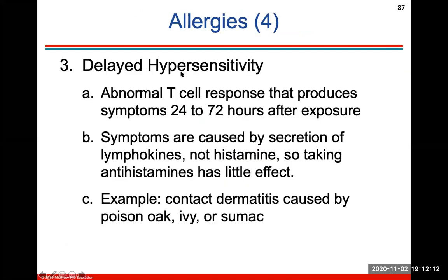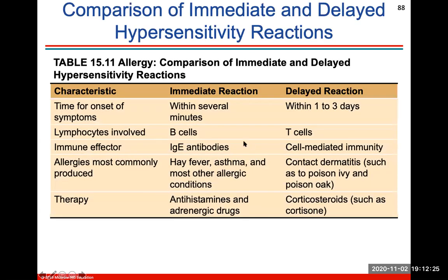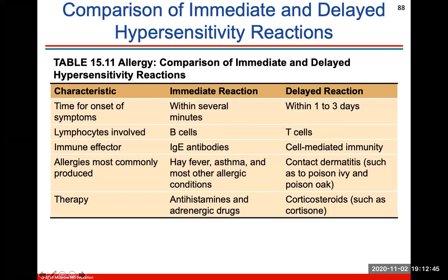Delayed hypersensitivity is an abnormal T cell response that produces symptoms 24 to 72 hours after exposure. An example is contact dermatitis caused by poison oak, poison ivy, or sumac. This chart shows differences between the immediate and delayed reaction — a good chart to understand, as allergies are so common and you'd likely interact with them in your medical fields in the future. And that's the end of chapter 15. We have a test coming this weekend — I hope you're all doing well.